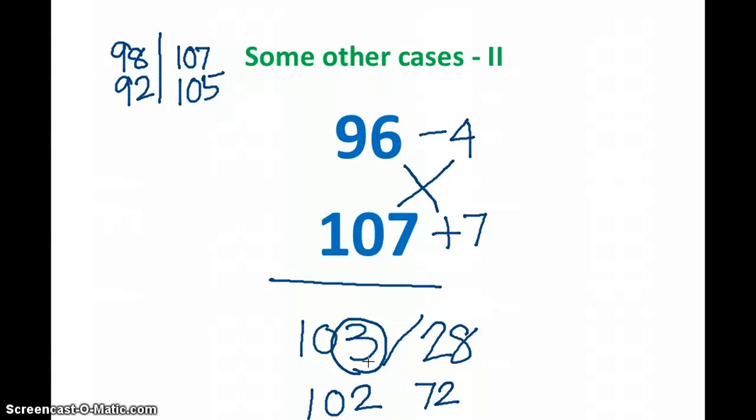Let's see it again. I know this will be a little confusing, but let's see it again. What did we do is, first thing we have done is 96 is 4 less than 100, then we have done 107 is 7 more than 100. We multiplied 7 into 4, which gave me 28.